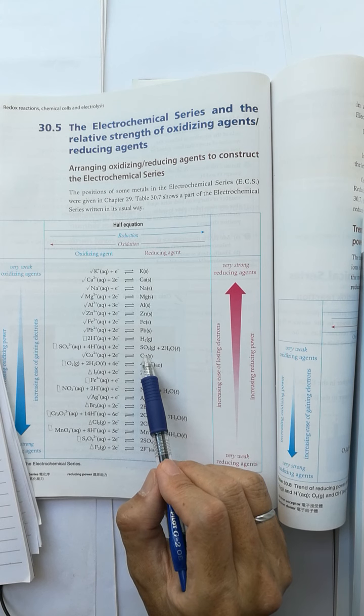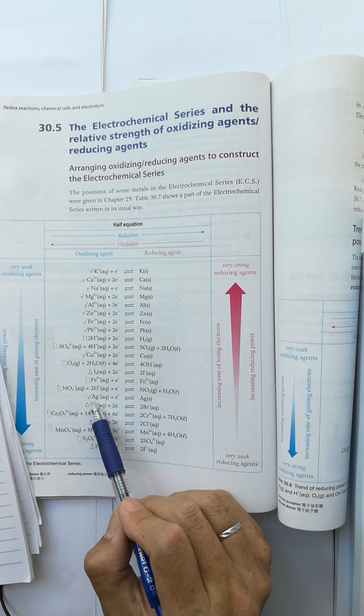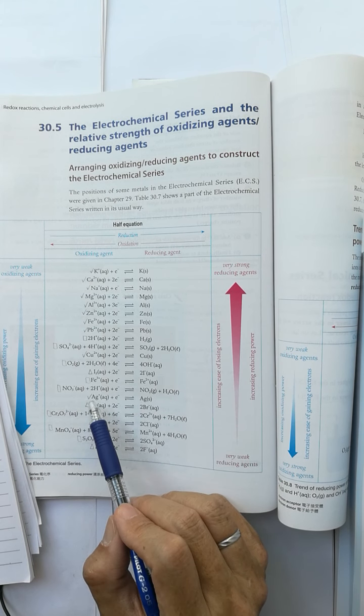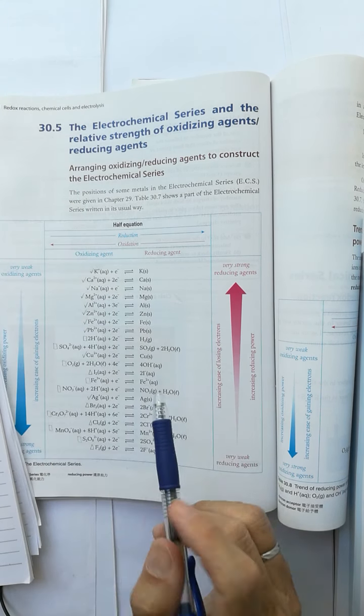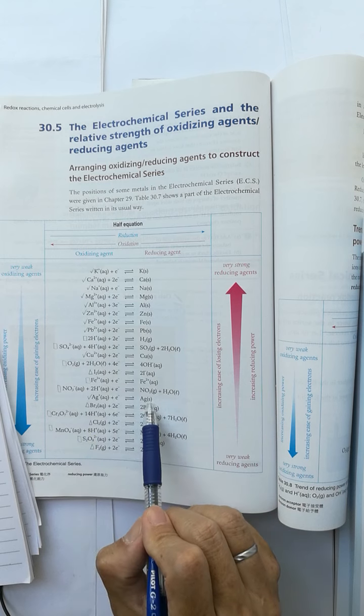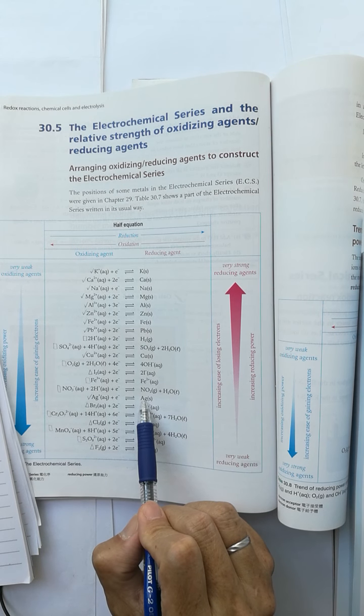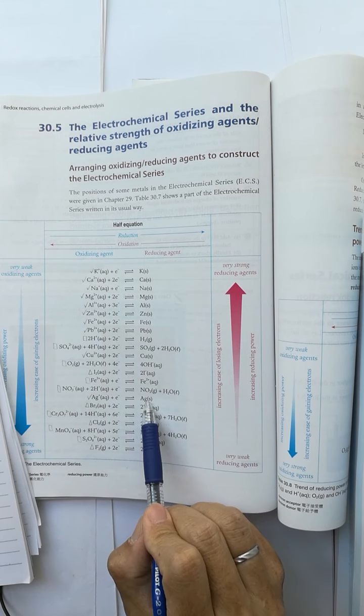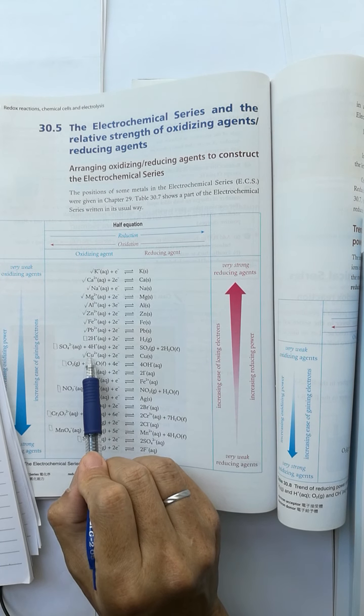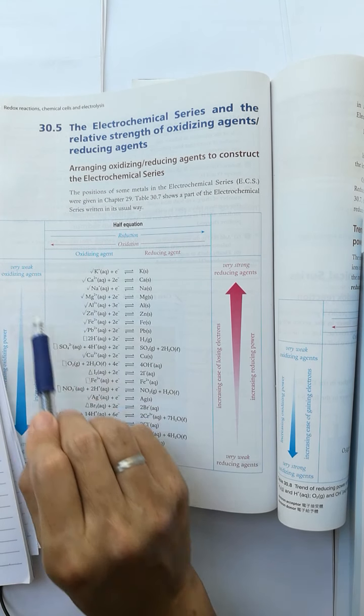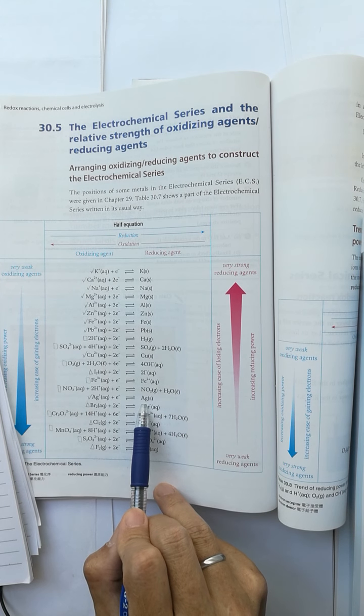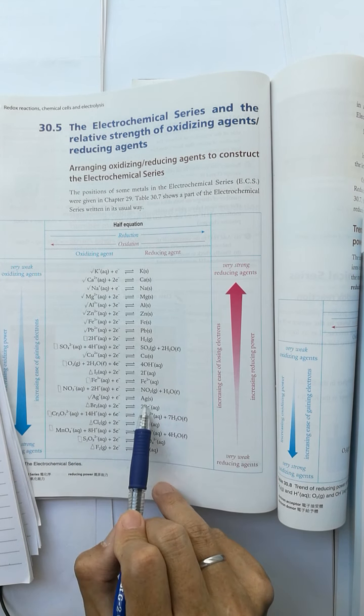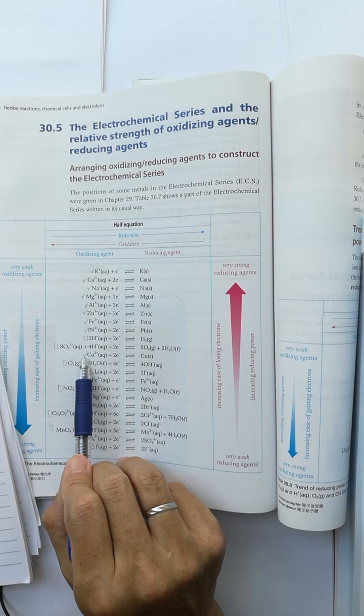Strong reducing agent loses electrons to strong oxidizing agent. However, silver is a weak reducing agent while copper two plus is a weak oxidizing agent. So silver cannot lose electrons to the copper two plus.